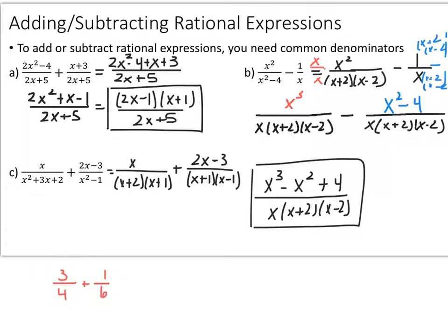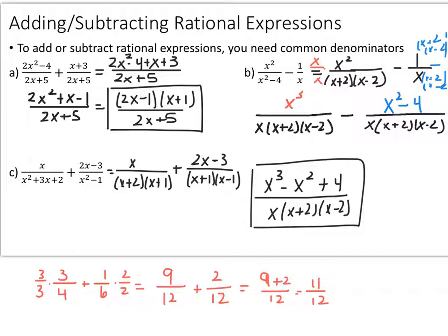It's more like 3 fourths plus 1 sixth. Even though there's nothing you can multiply 4 by to get 6 or 6 by to get 4, there is a least common denominator that's not just 6 times 4. The least common denominator is 12: the first fraction needs a 3 in both the numerator and the denominator, the second needs a 2 in both, and you end up with 11 over 12.